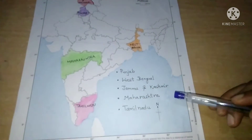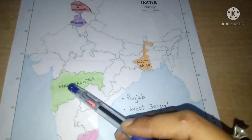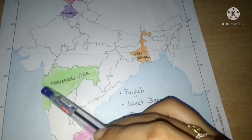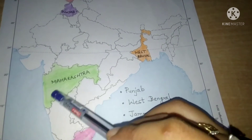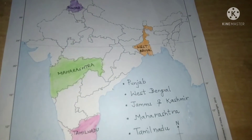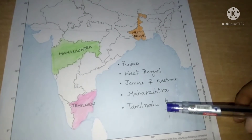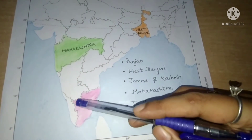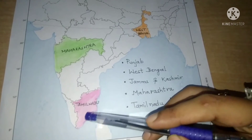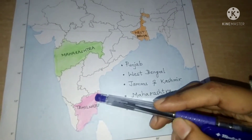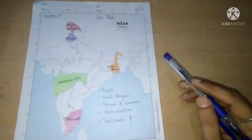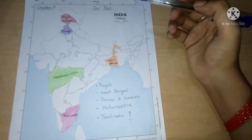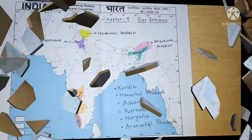Next is Maharashtra. The complete area which I have filled with green color — this is Maharashtra. And Tamil Nadu, the southernmost state of our country — that is Tamil Nadu. So in this way, you will mark all the places on the map of India and then fill color in them.